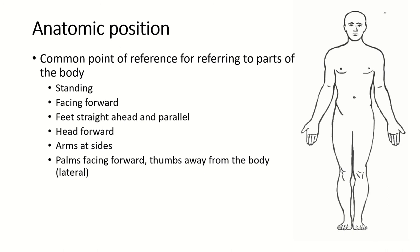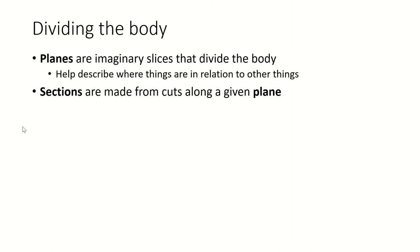So the other thing about anatomic position is that this is not the natural way you stand. But this is how we are going to describe parts of the body. So the palms are facing forward, the thumbs are lateral, meaning that they are away from the midline of the body, and that's another term we're going to learn in just a minute.